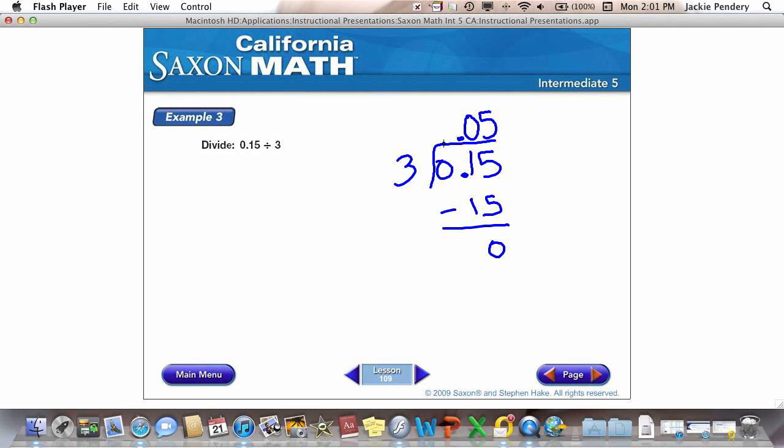So, my answer is .05 or 5 hundredths. So, you need to, this is why it's very important that you line up your numbers in your problem. If there is a number above the hundredths place, there needs to be a number above the tenths place. If there isn't one, put in a 0.